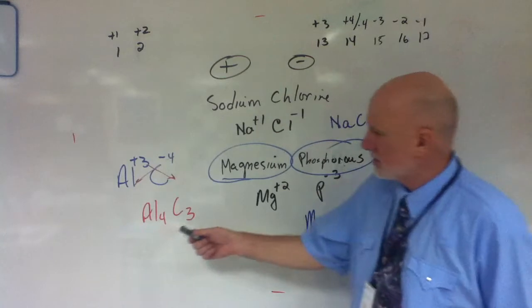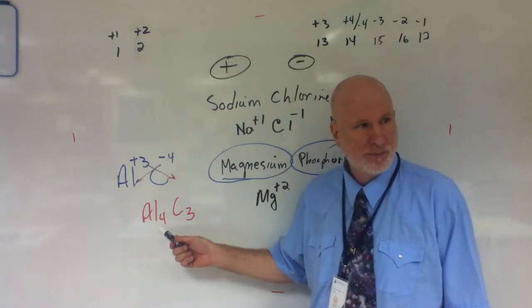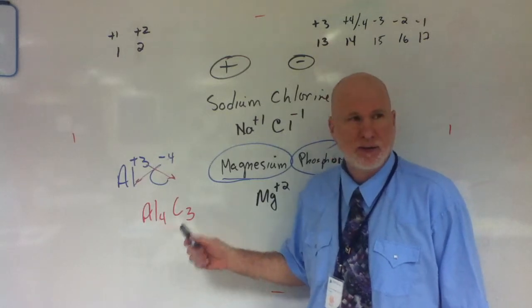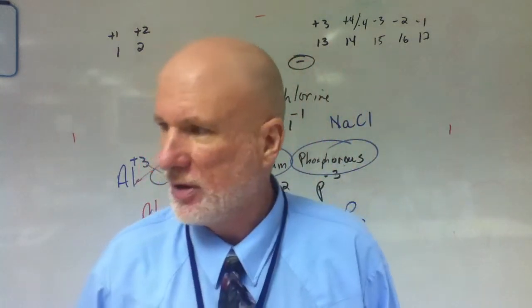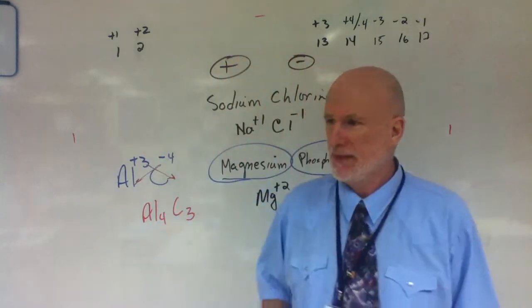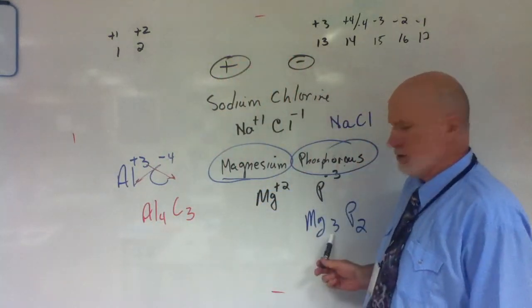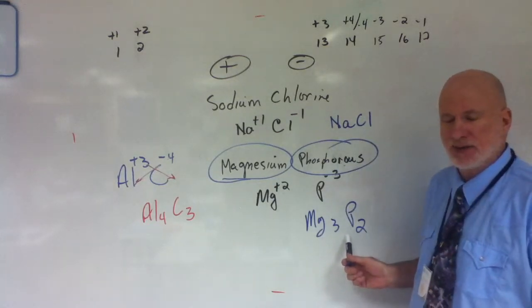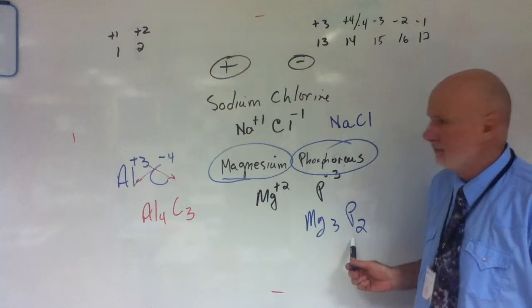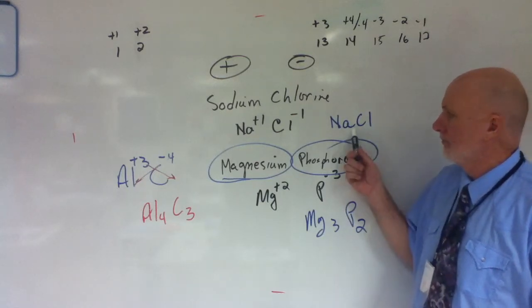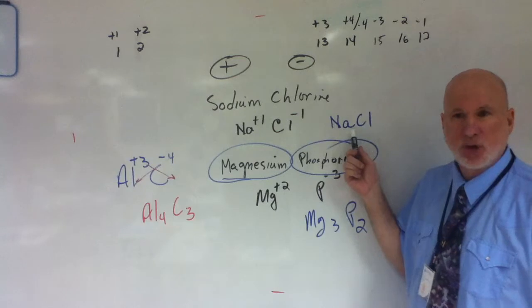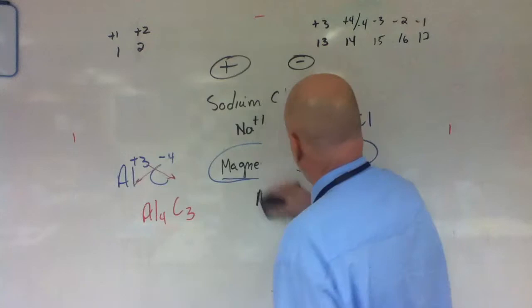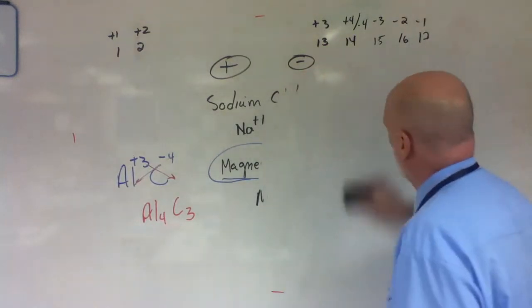So what are these? What's this called? Aluminum carbide, or aluminium carbide for our European brethren here, okay? How about this one here? Magnesium carbide, I mean, sorry, magnesium phosphide? How about this one? Sodium chloride. Sodium chloride. Okay, now, what I'll do is this. This is what I'll do. And then we'll look at this.